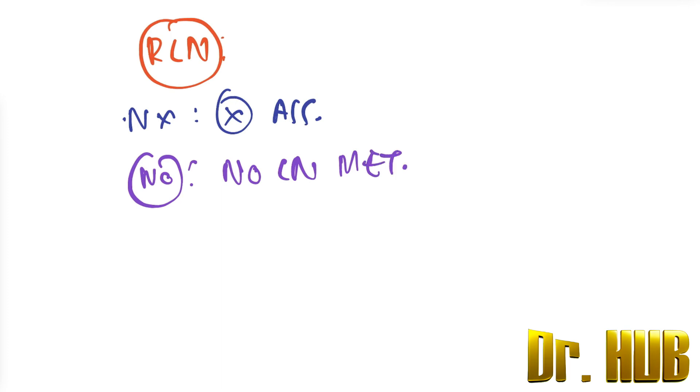In the 7th edition, N1 means metastasis in 1 to 3 pericolic or perirectal lymph nodes.